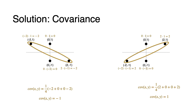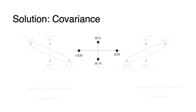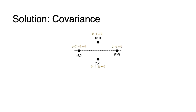Let's calculate the covariance of a centered dataset. This dataset doesn't skew in any of the two diagonals, so we expect the covariance to be small or zero. The products of coordinates are all zero, so the average of four zeros is 0. This set has covariance 0.